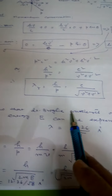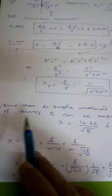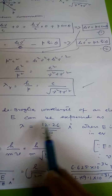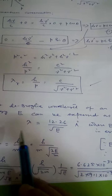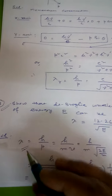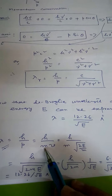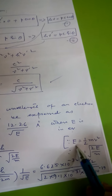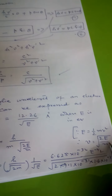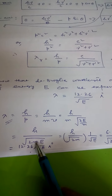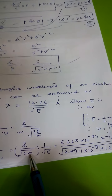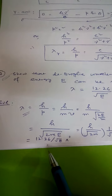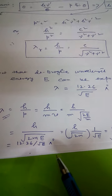Now let us consider our second problem: show that the de Broglie wavelength of an electron of energy E can be expressed as lambda = 12.26 / sqrt(E) angstrom, where E is in electron volts. From de Broglie hypothesis, lambda = h/p = h/(m*v). Kinetic energy E = (1/2)*m*v², so v = sqrt(2E/m). Substituting, lambda = h / sqrt(2mE). Putting in the values of the rest mass of the electron and Planck's constant, we get lambda = 12.26 / sqrt(E) angstrom. Hence it is established.